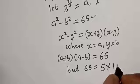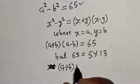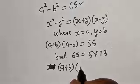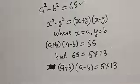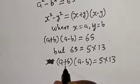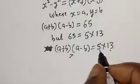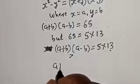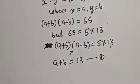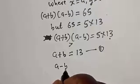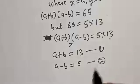Now, 65 is equal to 5 multiplied by 13. So a plus b multiplied by a minus b equals 5 multiplied by 13. Since a plus b is greater than a minus b, we assign: a plus b equals 13 — call this equation 1 — and a minus b equals 5 — call this equation 2, where a and b are positive integers.